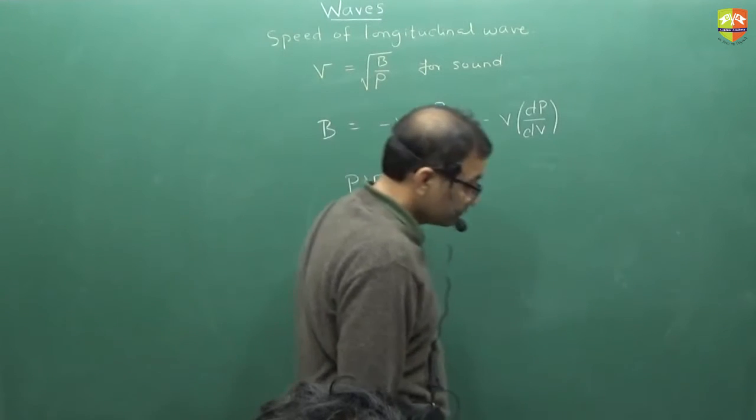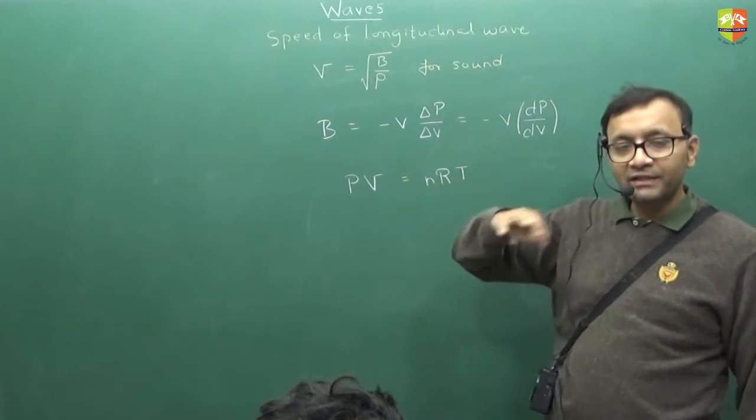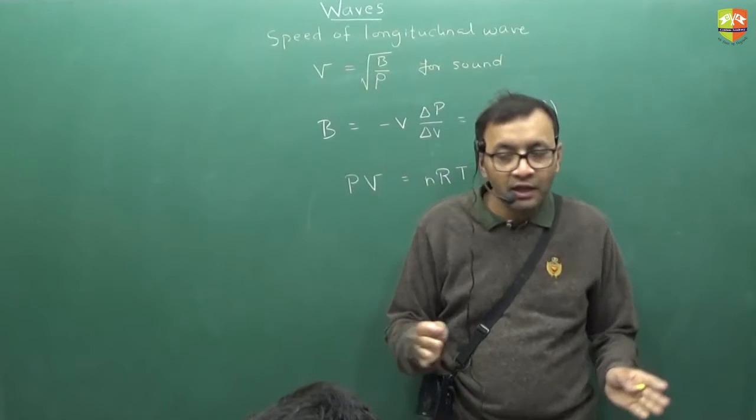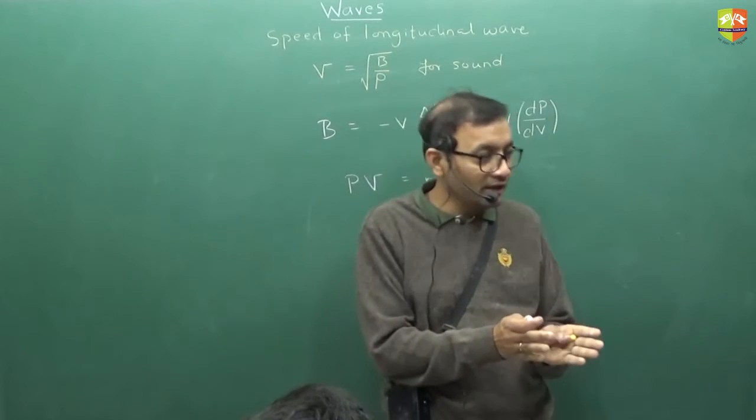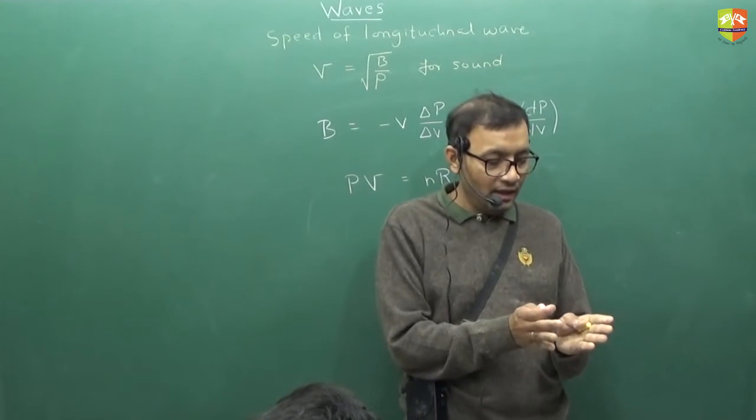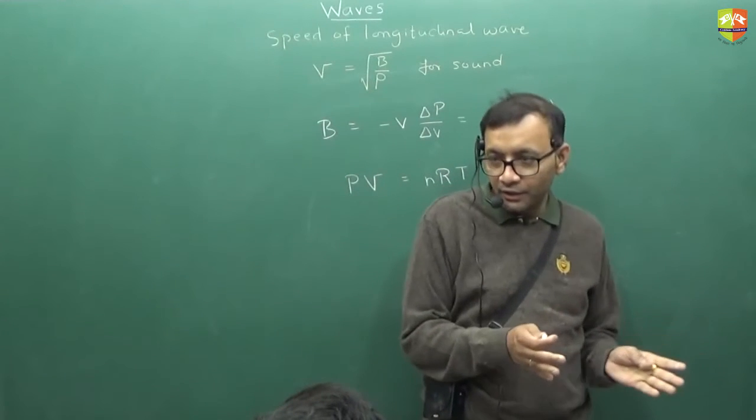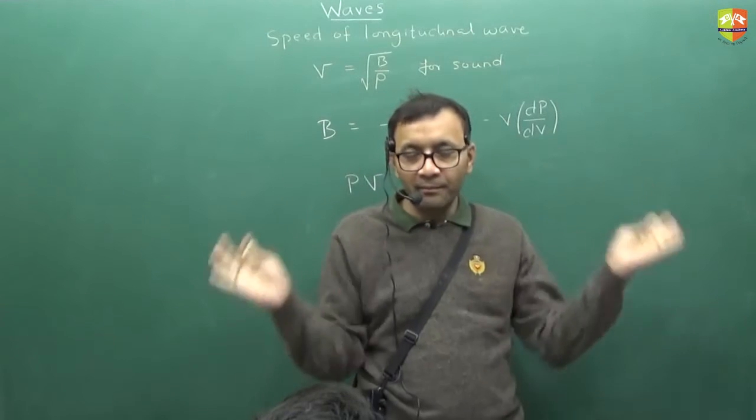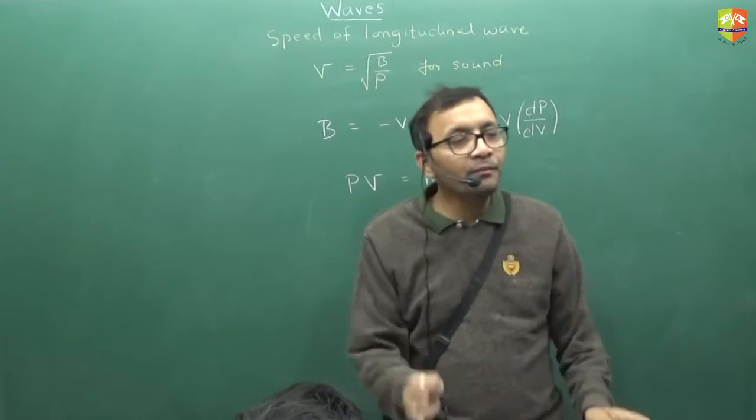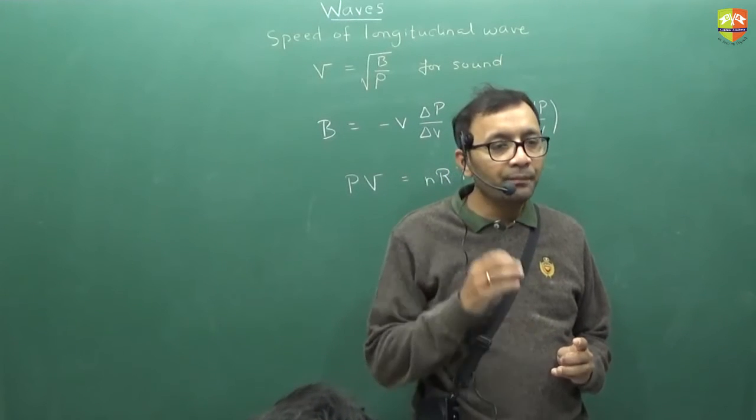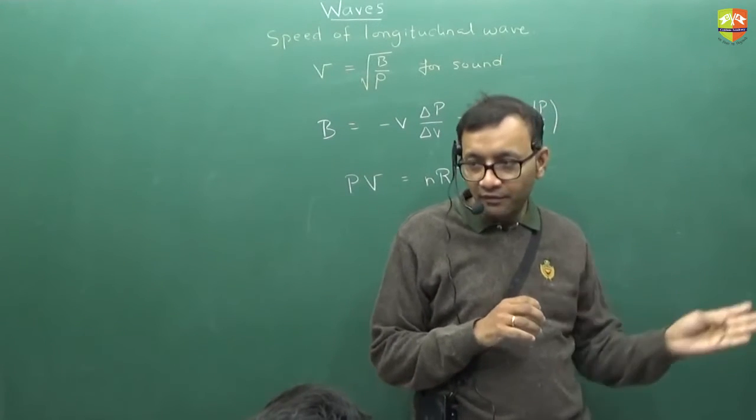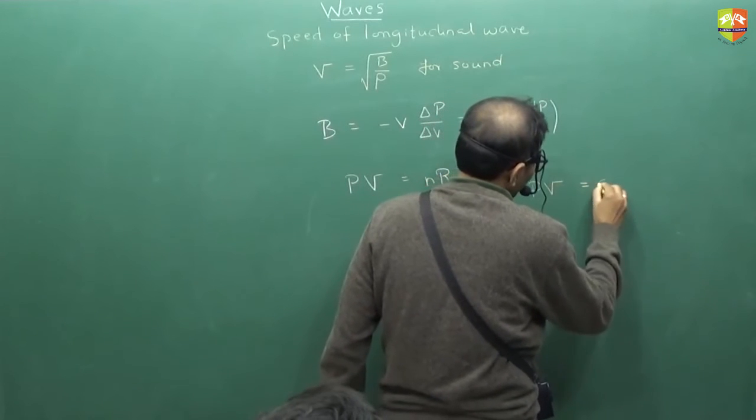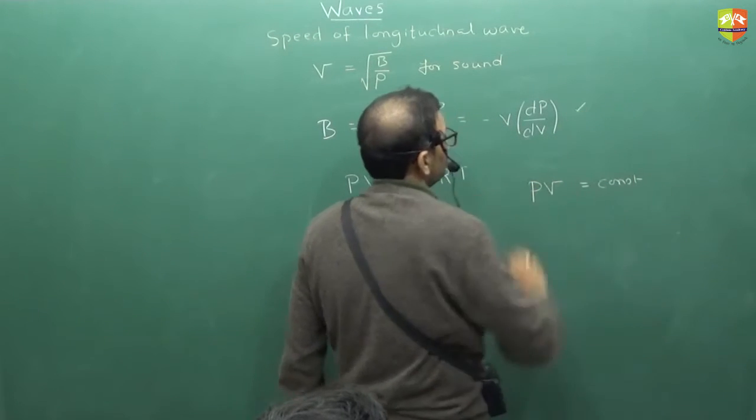So let's try to find out what is the bulk modulus. So bulk modulus is minus of V delta P by delta V. I can write it as minus of V dP by dV. Now when it comes to the atmospheric gas, can I treat it like an ideal gas? I can. So it follows ideal gas equation PV is equal to nRT. Now at the same time when the wave is traveling, what will happen? There will be compression and then expansion. It's a longitudinal wave. So what kind of thermodynamic process it is?